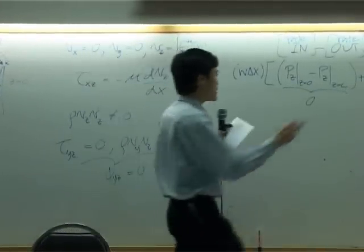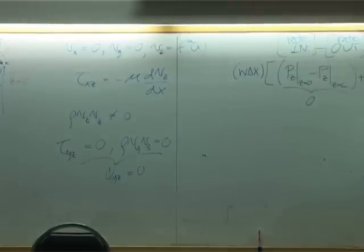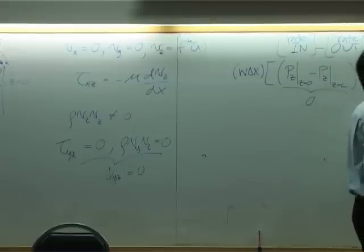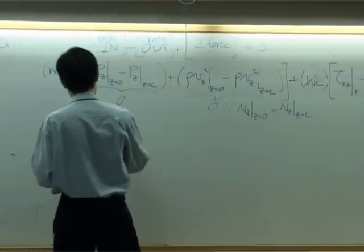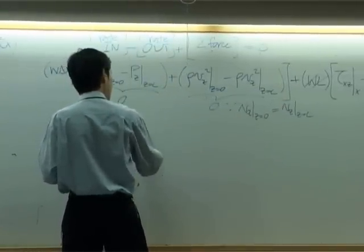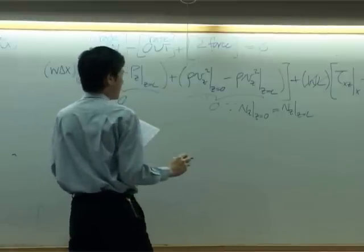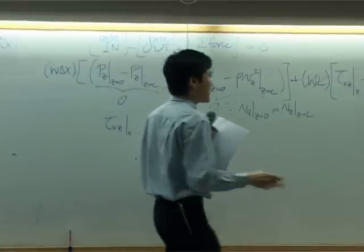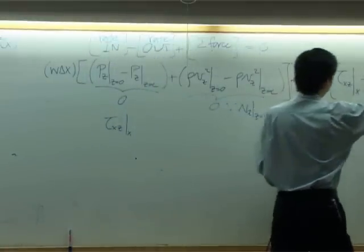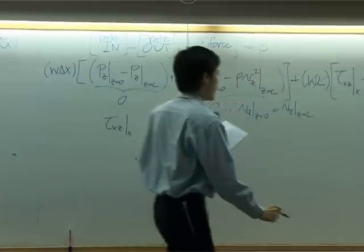So the equation here, if I divide the whole equation by W L, these two terms can be dropped out. What you have left is tau xz at x.